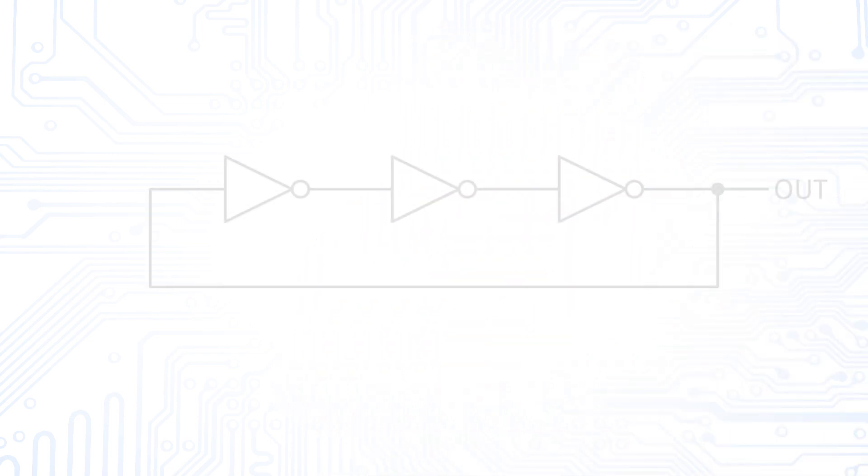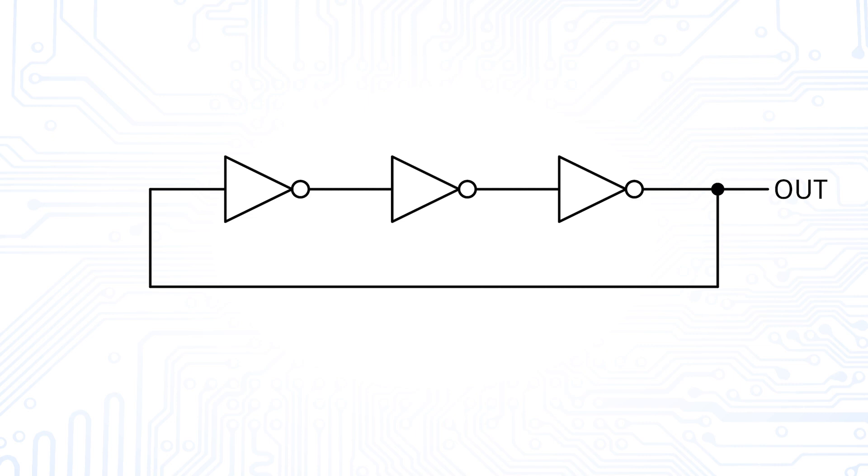But how large is the frequency of such a structure? Let us have a look at the output node of this three-inverter ring oscillator and assume that the output has just switched to low.